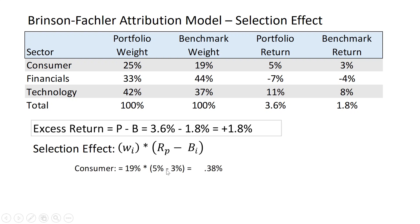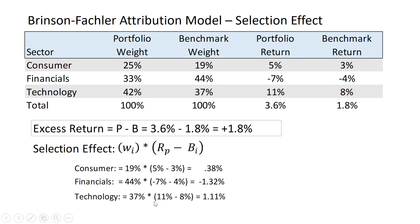For consumers: 19% times 2% gives 38 basis points of excess return. Financials is a disaster relatively speaking — we allocated 44% (the benchmark weight), but we had really bad security selection, and that cost us 132 basis points. For technology, we take the benchmark weight of 37%, multiply by our excess return of 3%, and that adds 111 basis points. So good stock selection within technology was really important. Adding it all up, it's still positive: 17 basis points. Your consumer and technology analysts did much better than your financials analysts, who picked some pretty bad stocks that month.